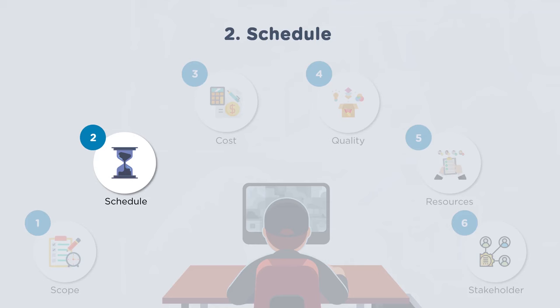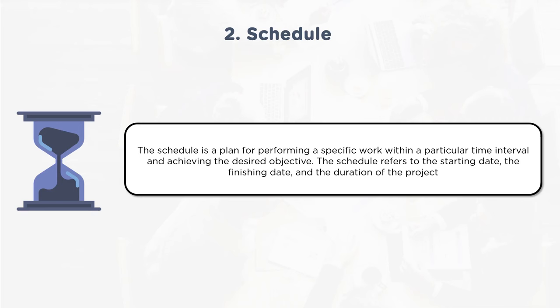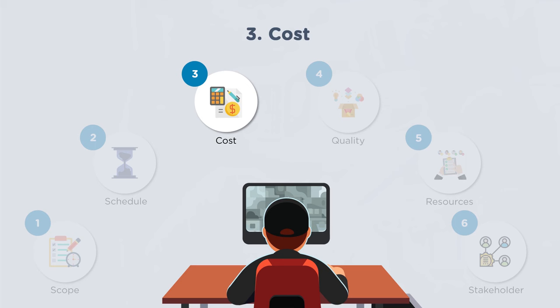For schedule management, one must plan how long a project will take, what deliverables should happen in what sequence, and what activities are required. Schedule management tells you the duration of the project, the sequence of tasks, the dependencies between tasks, and the priority of deliverables.